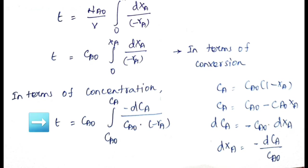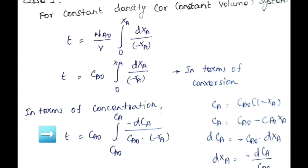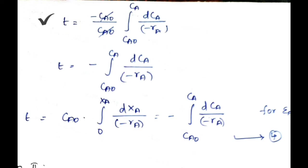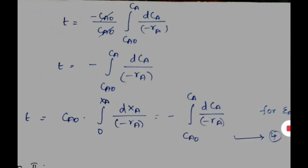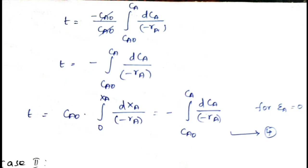So the performance equation for a constant volume system is: in terms of conversion, t = CA0 · ∫₀^XA dXA / (−rA); and in terms of concentration, t = −∫(CA0 to CA) dCA / (−rA). Most liquid-phase reactions are examples of constant volume systems.